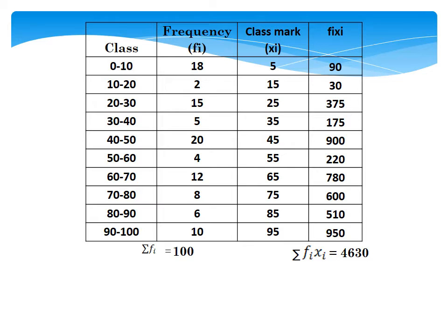We are going to find the mean of the given data by the direct method. To do so, we form a new tabular column with four columns. The first column has all the classes from the question, and the second column has the frequencies. In the third column, we find the class mark, which is the average of the upper limit and the lower limit. For example, the first class is 0 to 10: the average of 0 and 10 is 10 divided by 2, which equals 5. So the class mark is 5.